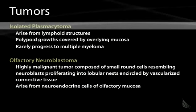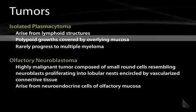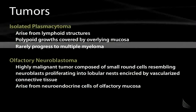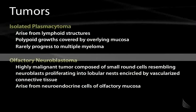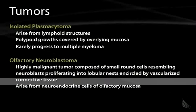The isolated plasmacytoma is a tumor arising from lymphoid structures in the nasopharynx, presenting as polypoid growth surrounded by overlying mucosa. Importantly, as the name isolated implies, it will rarely progress to the more malignant plasma cell tumor, multiple myeloma. The olfactory neuroblastoma is a small round blue cell tumor of the nasopharynx that can present as low-grade or highly malignant, composed of small round blue cells resembling neuroblasts. It arises from neuroendocrine cells of the olfactory mucosa and stains with immunohistochemical markers for neuroendocrine cells such as synaptophysin.